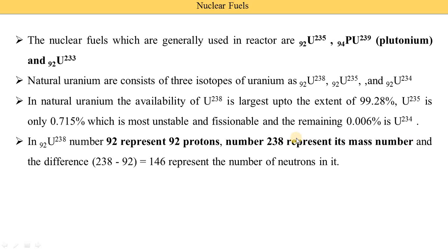The difference between the mass number and the proton number gives the neutron count. For Uranium-238, the mass number is 238 and the proton number is 92, so 238 minus 92 equals 146. That 146 represents the number of neutrons in it.